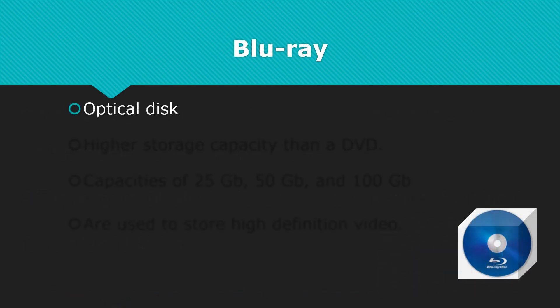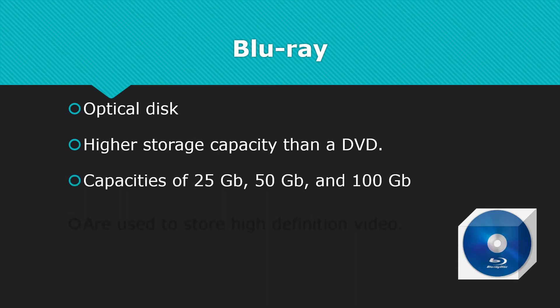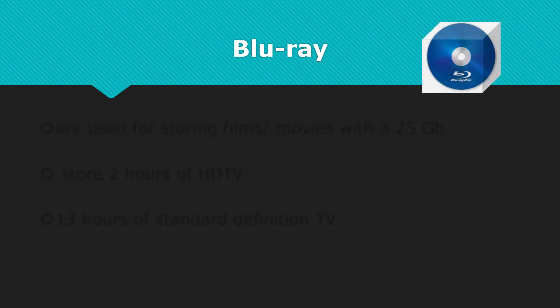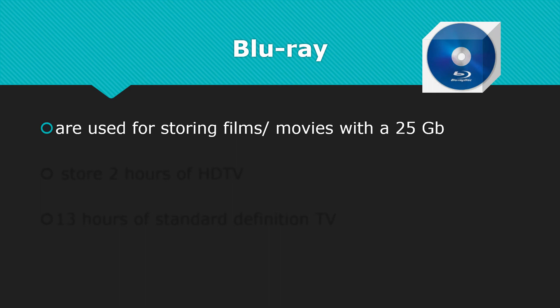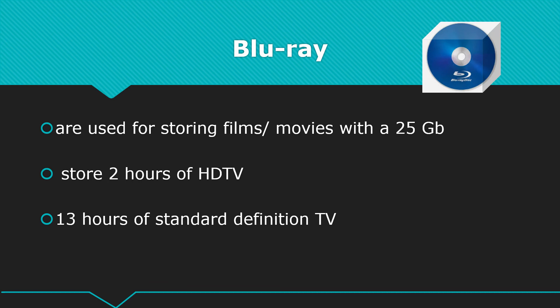Blu-ray is an optical disk that has a much higher storage capacity than a DVD. Blu-ray disks have capacities of 25 gigabytes, 50 gigabytes, and 100 gigabytes. These high-capacity Blu-ray disks are used to store high-definition video. A 25 gigabyte Blu-ray disk can store two hours of high-definition TV or 13 hours of standard definition TV. It is also possible to play back video on a Blu-ray disk while simultaneously recording high-definition video.